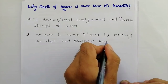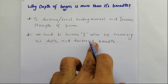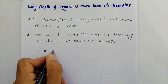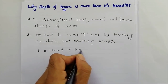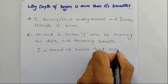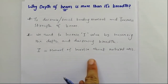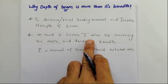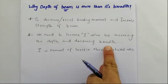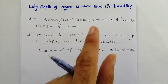The second point is we need to increase the I-value, that is the moment of inertia about the neutral axis, by increasing the depth of the beam and decreasing its breadth or width. If you want to improve or increase the moment of inertia, you have to increase the depth and decrease the breadth of the beam, so that the moment of inertia about the neutral axis is greater and the beam is stable.